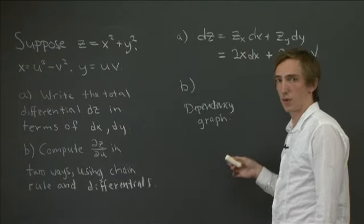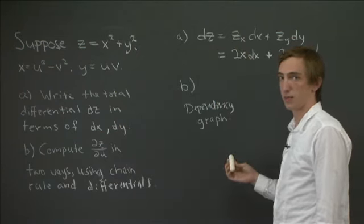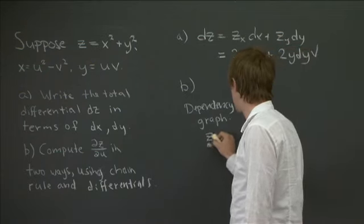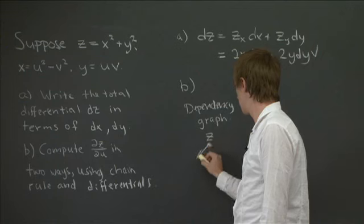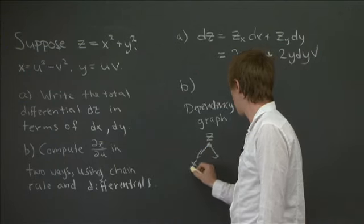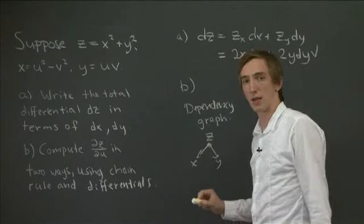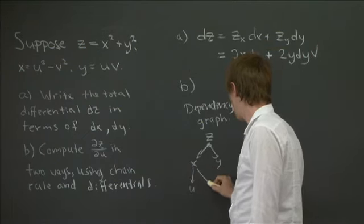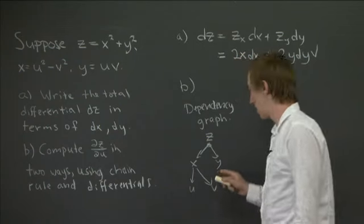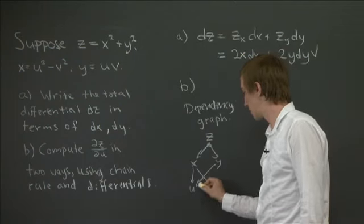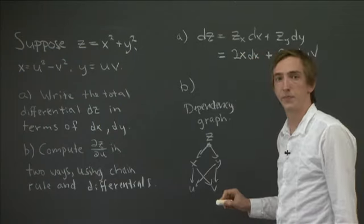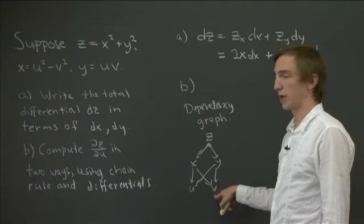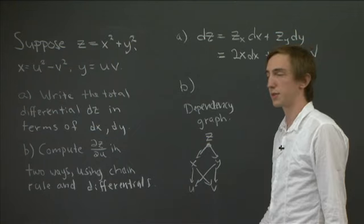And this is just a way for me to organize how the different variables depend on one another. So at the top, we have z. And z is a function of x and y. But x is itself a function of both u and v, and y is also a function of u and v. So z depends on x and y, and x and y each jointly depend on u and v. So it's a little bit complicated, the relationships here.